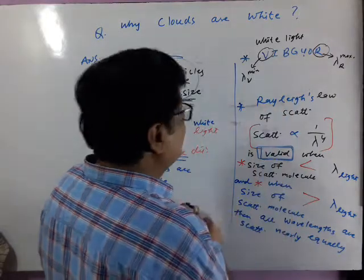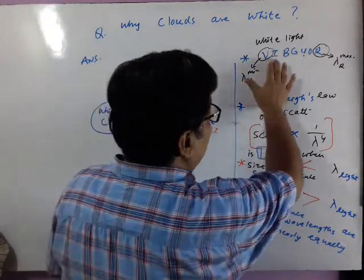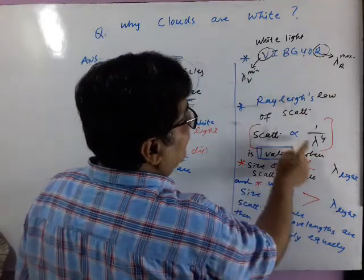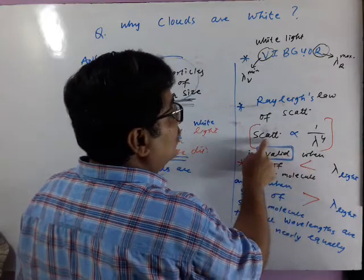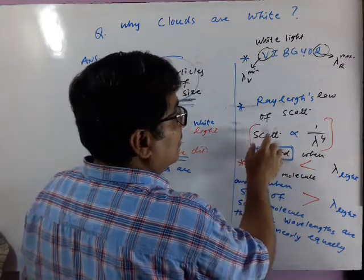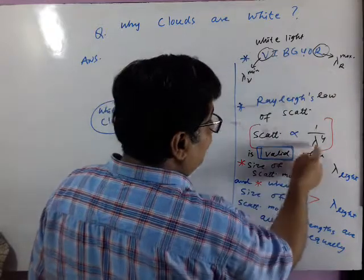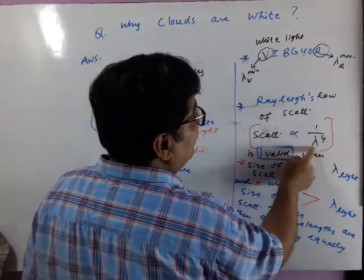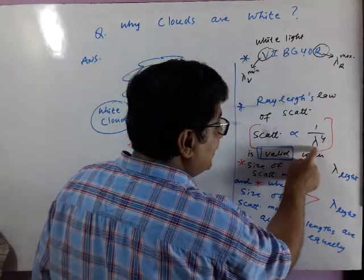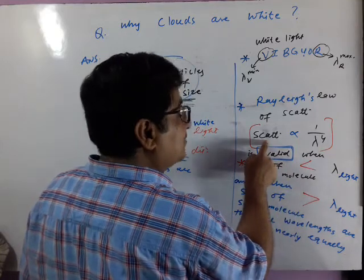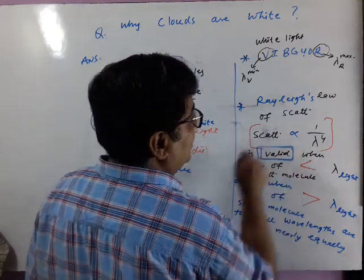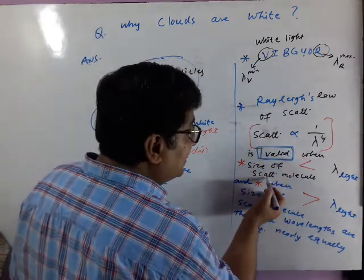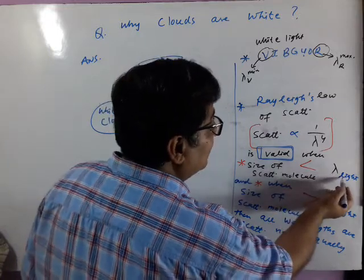This law tells us different colors, different wavelengths scatter differently. Dekhye, violet color ki wavelength sabse kam hai. To scattering of violet is maxima. Her color ki alag-alag wavelength hai. To her color ki scattering bhi alag-alag hooghi. Jaysay red ki wavelength ki value sabse jajah hai. To scattering of red sabse kam hai. Ye ulte judha hai. Inversely proportional. But this law is valid when size of scattering molecule is less than wavelength of light.